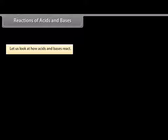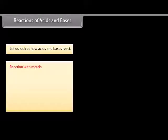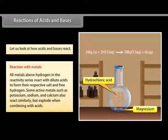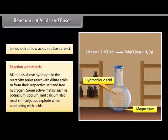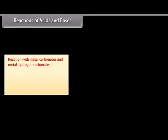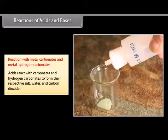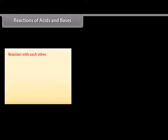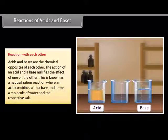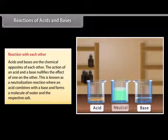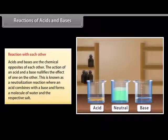Let us look at the different reactions of acids and bases: with metals, metal carbonates, metal hydrogen carbonates, and with each other. All metals above hydrogen in the reactivity series react with dilute acids to form their respective salt and free hydrogen. Active metals such as potassium, sodium, and calcium also react similarly but explode when combining with acids. Acids react with carbonates and hydrogen carbonates to form their respective salt, water, and carbon dioxide. Acids and bases are the chemical opposites of each other — the neutralization reaction is when an acid combines with a base to form a molecule of water and the respective salt.